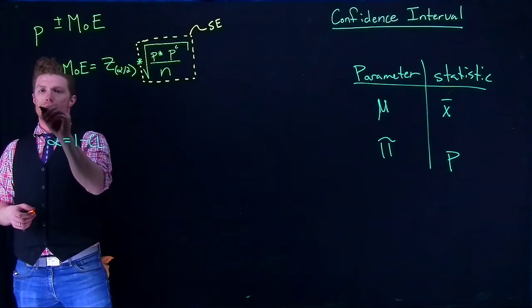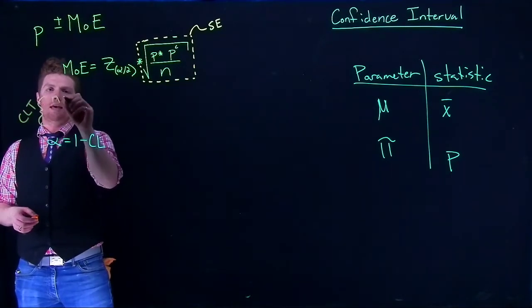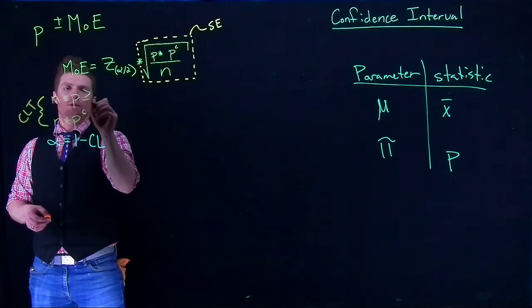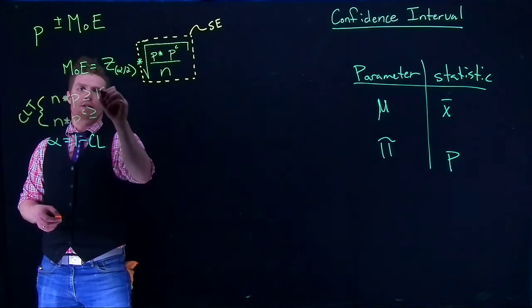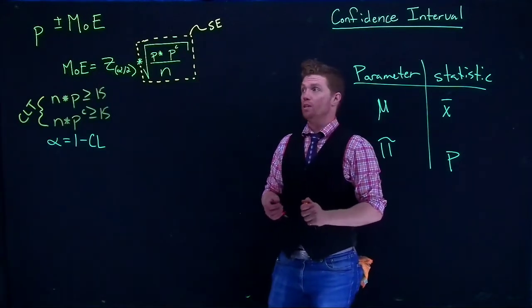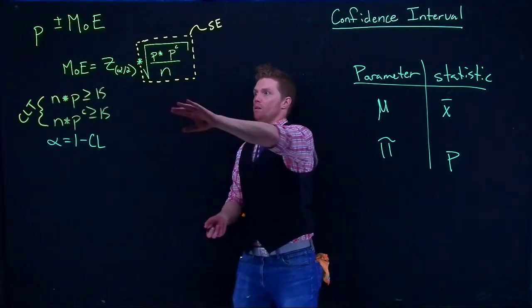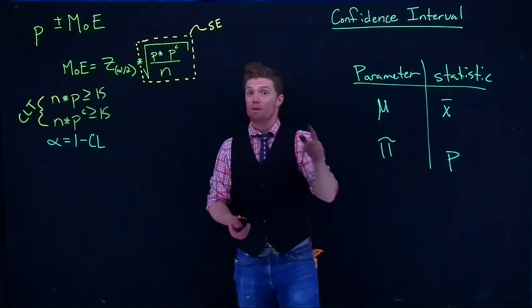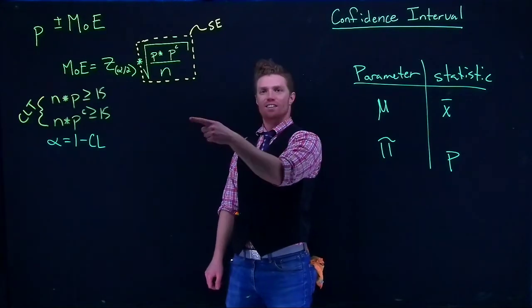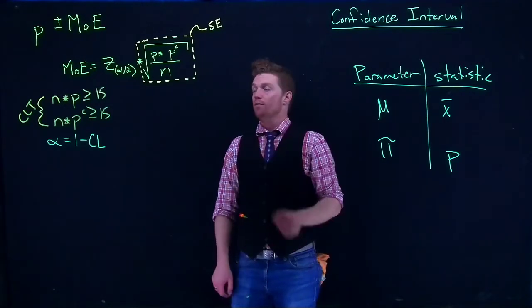For the central limit theorem, remember that N times P and N times P complement both of those need to be greater than or equal to 15. If they don't, we should probably just hold off from doing this confidence interval because this method requires that the sampling distribution is approximately normal. We're only able to do that if our sample size is sufficiently large that we've got at least 15 successes and 15 failures.